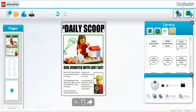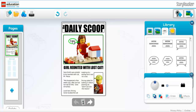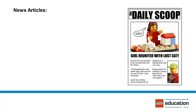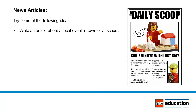If the format is followed correctly, a news article is an effective and direct way to communicate important information. Try some of the following ideas. Have your students write an article about a local event in their town or at their school.